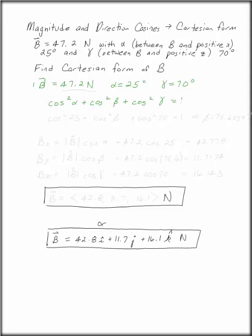Where alpha, beta, and gamma are between B and the x, y, and z-axis respectively. We know that alpha is 25 degrees, and gamma is 70 degrees. We can solve this to find the other direction cosine. In this case, beta is 75.626 degrees.